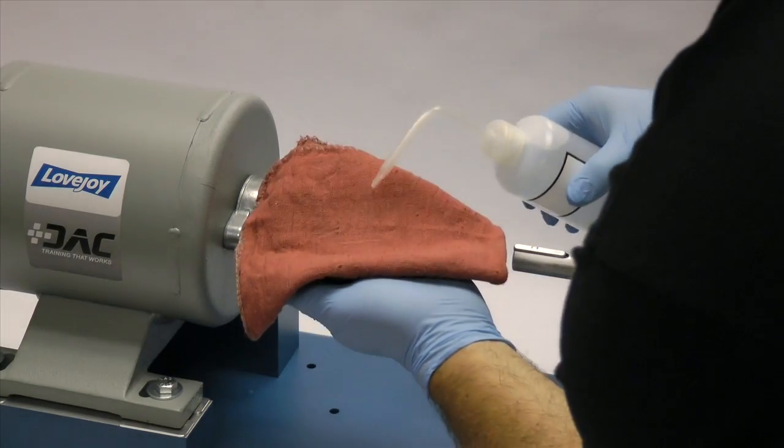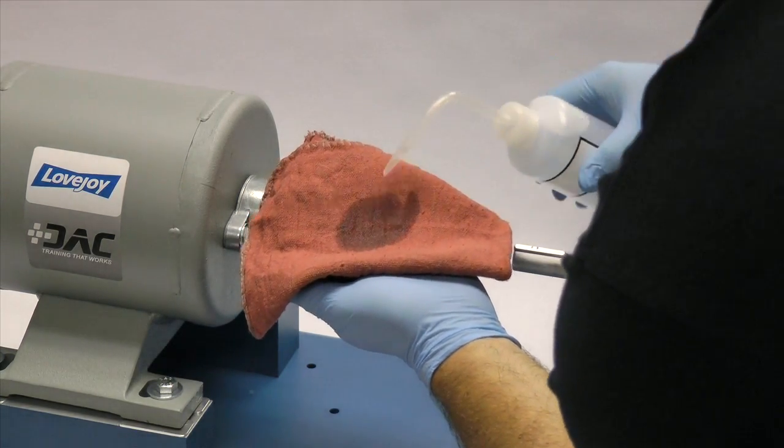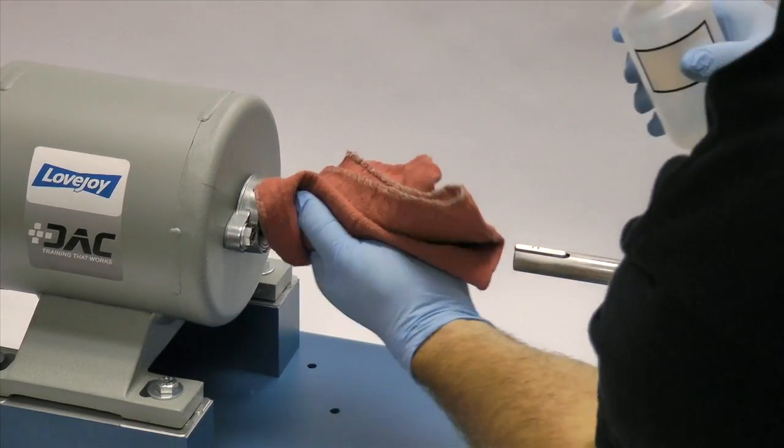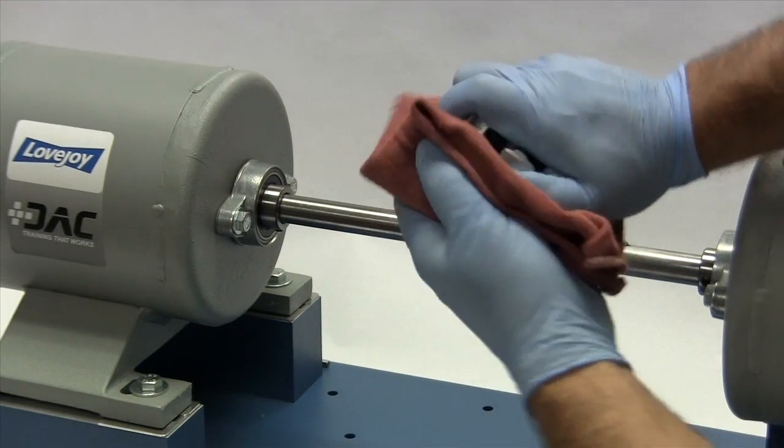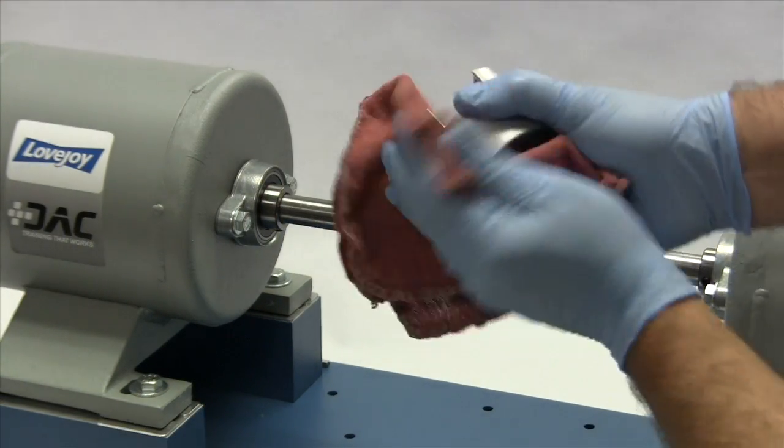Finally, using our cloth and cleaning solvent, we need to ensure the surface of the shaft and keyway are clean and free of dirt. The hub should also be cleaned to remove any coatings used to protect them during shipping.